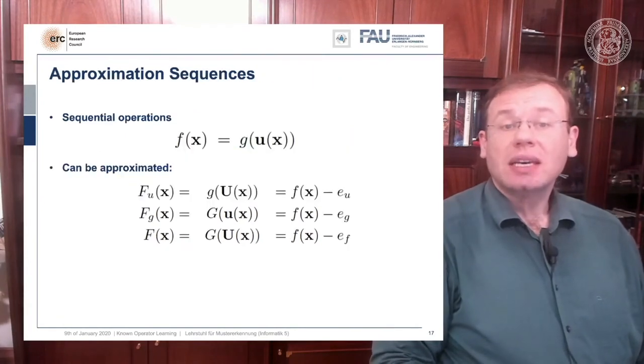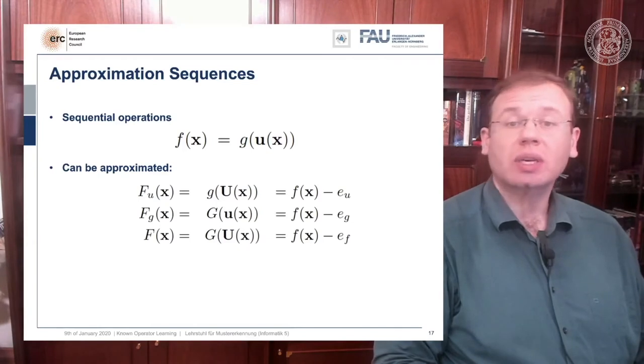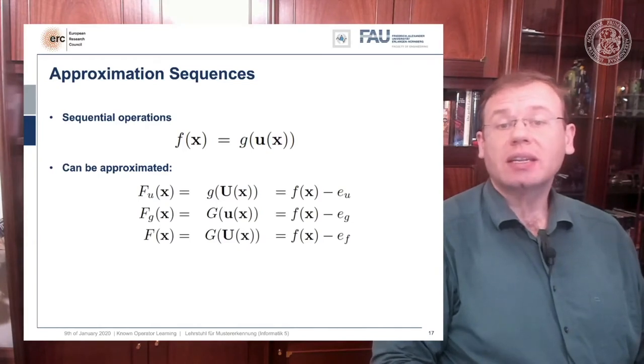So we now want to approximate sequences, and if I look at f we can see that there's essentially three choices how we can approximate it. We can approximate only U, then this would give us f U.